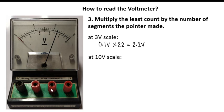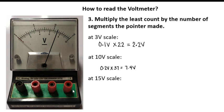But if we connected our circuit at the 10 volts scale, it would be the least count of 0.2 volt times 37, because the pointer points at the 37th line using the 10 volt scale. So that is 0.2 times 37, which gives 7.4 volts. And if your circuit is connected at the 15 volt scale, that would be the least count of 0.5 volts times 22, because the pointer points at the 22nd line. Therefore, the voltmeter reading would be 11 volts.